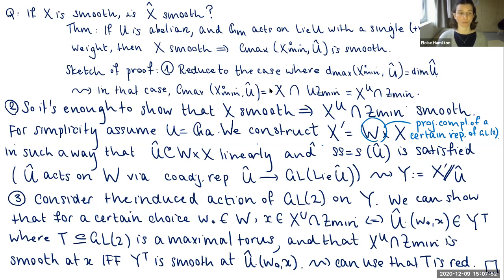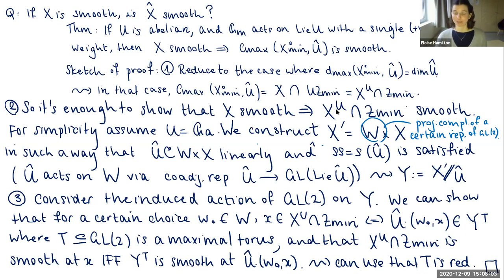What we need to show is that if X is smooth, then the intersection of the U-fixed point set with Z_min is smooth. This is tricky because in the reductive case we had that if R is reductive, then the R-fixed point set is smooth. Since U is not reductive, we can't appeal to that result. The idea is that taking this intersection makes it work.